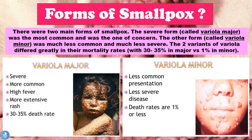The variola major form was the more deadly and more severe form. It was actually the more common form, and patients had a higher fever and a more extensive skin rash, with a 30 to 35% death rate. The variola minor form was much less common, less severe, with a death rate of 1% or less, and the rash as well as the fever was much less severe than in the variola major form.